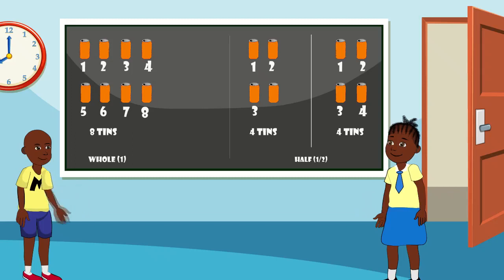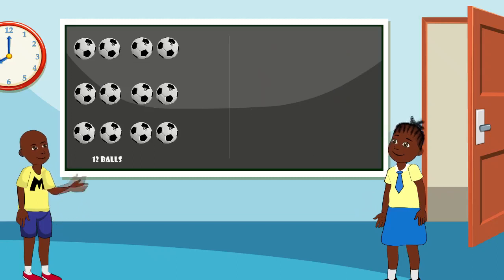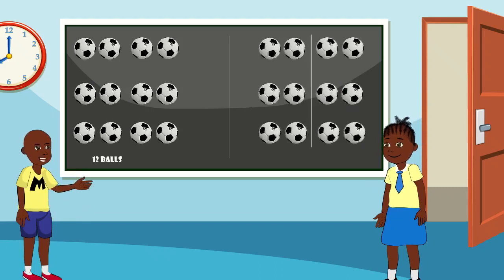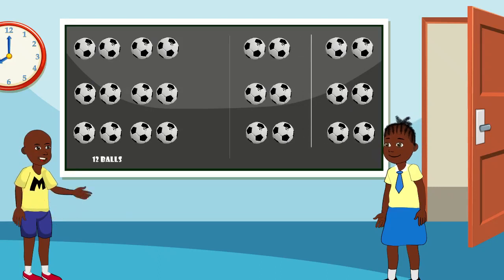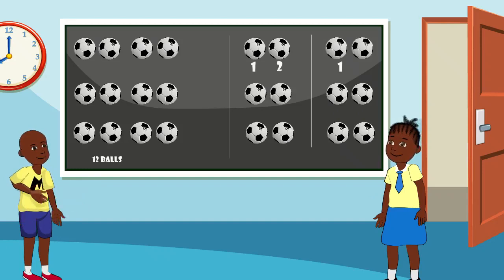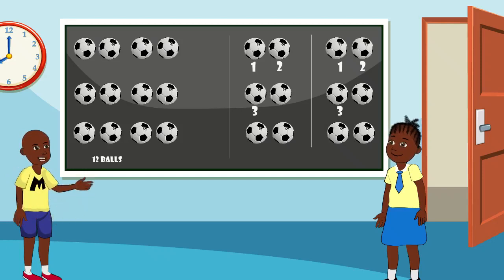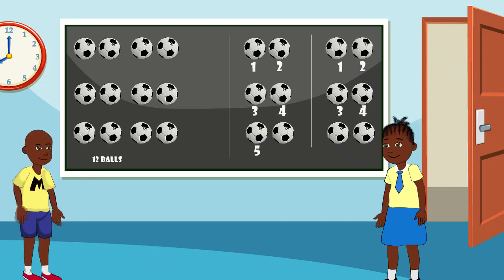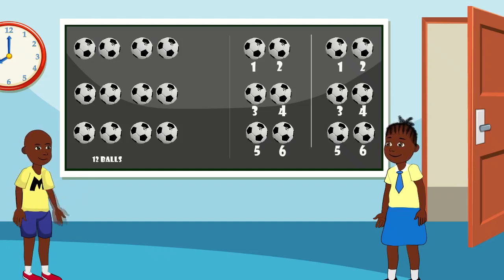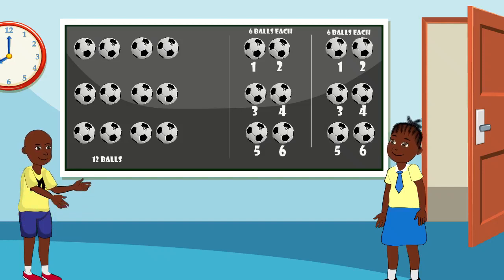Let's see another example. There are 12 balls here. Again, let's try sharing them between Amaka and I. One for me, one for Amaka, two for me, two for Amaka, three for me, three for Amaka, four for me, four for Amaka, five for me, five for Amaka, six for me and six for Amaka. That's six balls each. We both get half of the whole 12 balls. That's fair share!